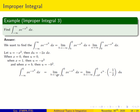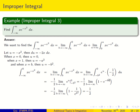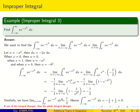For the first integral, after substitution, minus one-half factors out, giving minus one-half times the integral of e to the u du, which equals e to the u, evaluated at 0 and minus b squared. E to the 0 is 1, and e to the minus b squared is 1 over e to the b squared. As b goes to infinity, that term goes to 0, leaving 1 minus 0 equals 1, times minus one-half equals minus one-half. By a symmetric argument, the second integral converges to one-half.